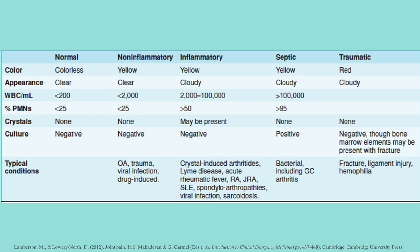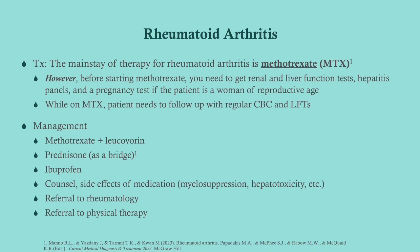The mainstay of treatment for RA is methotrexate. Before starting it, you need to get liver panels, hepatitis panels, and a pregnancy test — renal tests are also important and usually part of the initial workup. Patients will then need regular follow-up CBCs and liver function tests because methotrexate is myelosuppressive, so we watch for decreases in any cell lines, and it is mildly hepatotoxic, so we monitor liver function.